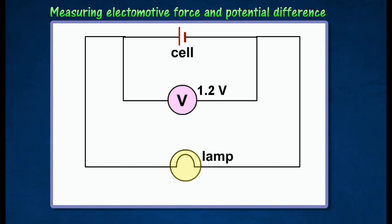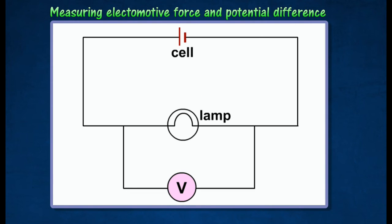In this case, the voltmeter reading shows the terminal potential difference across the lamp. Then the potential difference across the lamp is 1.2 volts. The reading of the voltmeter will be the same if it is connected across the lamp terminals instead of the cell terminals.